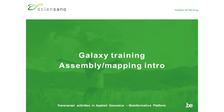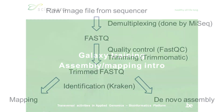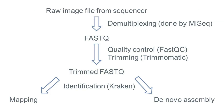Now that we have completed the quality control of the sequences, we are ready to get some information from the data. In our workflow we will describe two different ways of working with the data: either we map the data to a known reference, or we perform de novo assembly. Before we continue with the practical demonstration, this video will give a high-level overview of the difference between mapping and assembly.